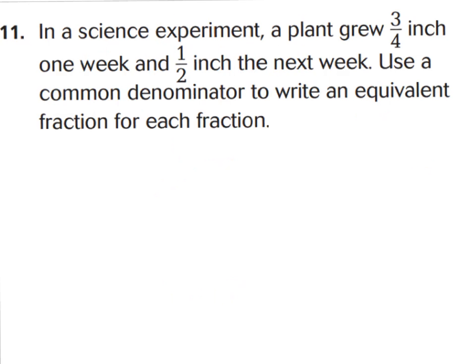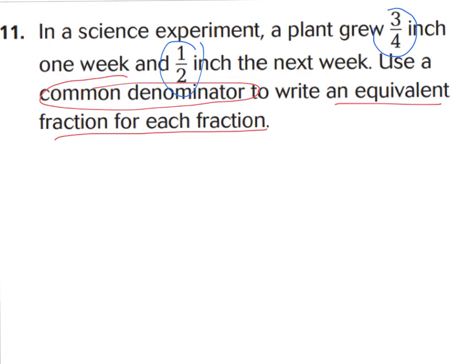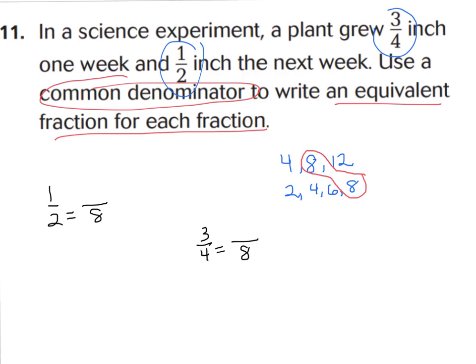Let's move on to number 11. In a science experiment, a plant grew three-fourths of an inch in one week and one-half of an inch in the next week. Use a common denominator to write an equivalent fraction for each fraction. Go ahead and pause the video to find your least common denominator and write equivalent fractions. You should have said your common denominator was 8. One-half equals four eighths, and three-fourths equals six eighths.